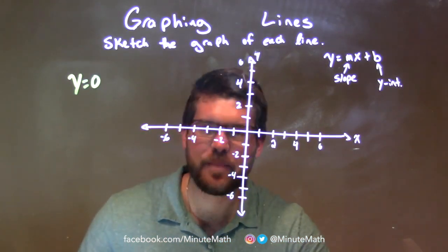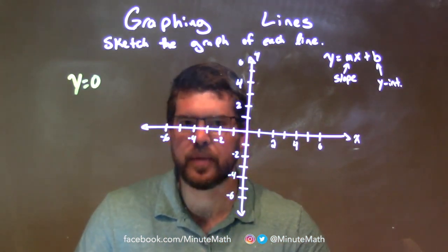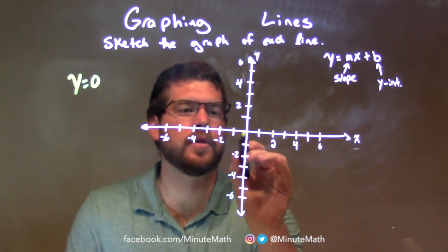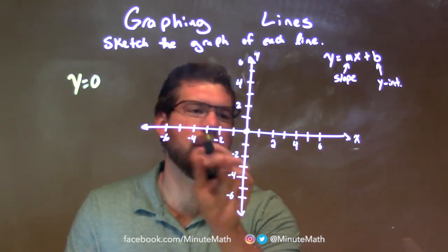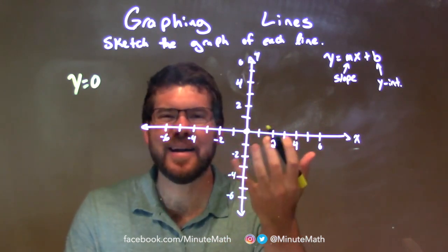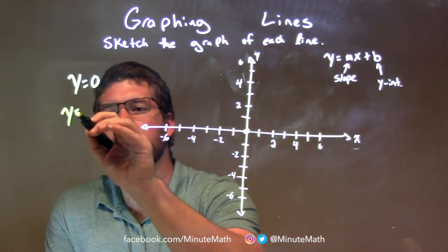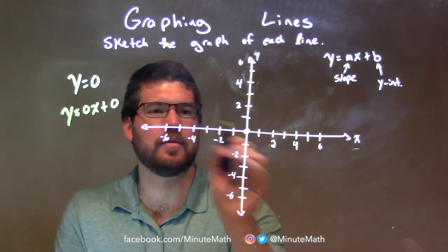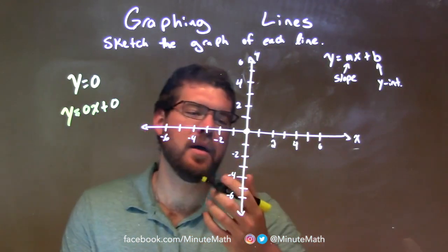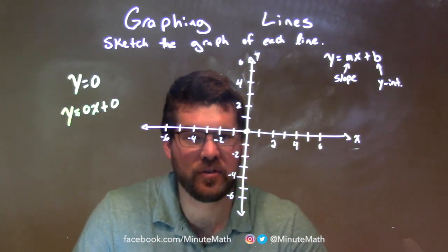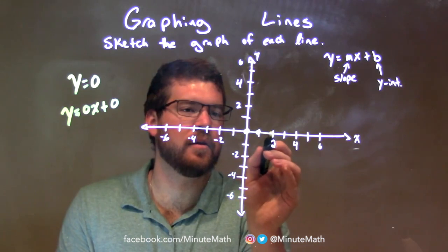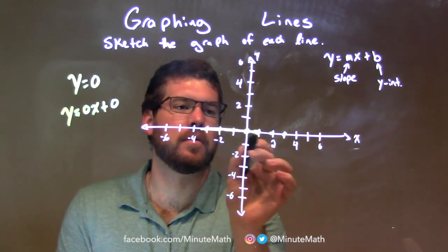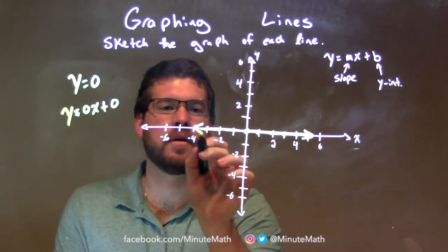y equals 0. We know this is just going to be a horizontal line. We start at the origin — the y-intercept is 0. To help students see it, I'll sometimes show it as y equals 0x plus 0, so we have a slope of 0 and a y-intercept of 0. It's unnecessary to write the 0x, but if it helps you see it, it helps. This is just a horizontal line at the origin. And there is our graph.